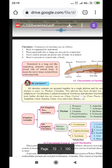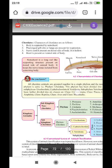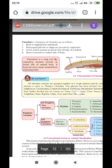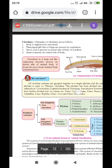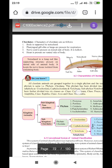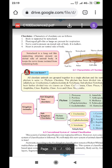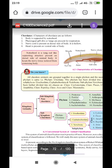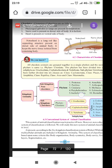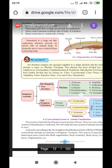Notochord is a long rod-like supporting structure present on the dorsal side of the animal body. It keeps the nerve tissue isolated from the remaining body. Chordates' nerves get spread up everywhere and connected to each part of the body.